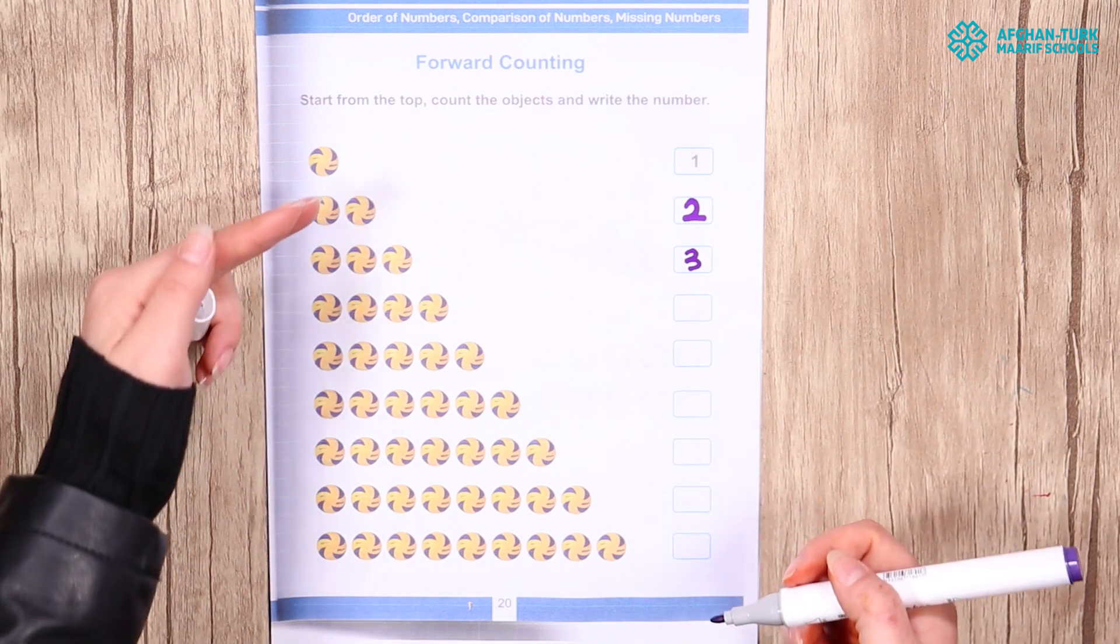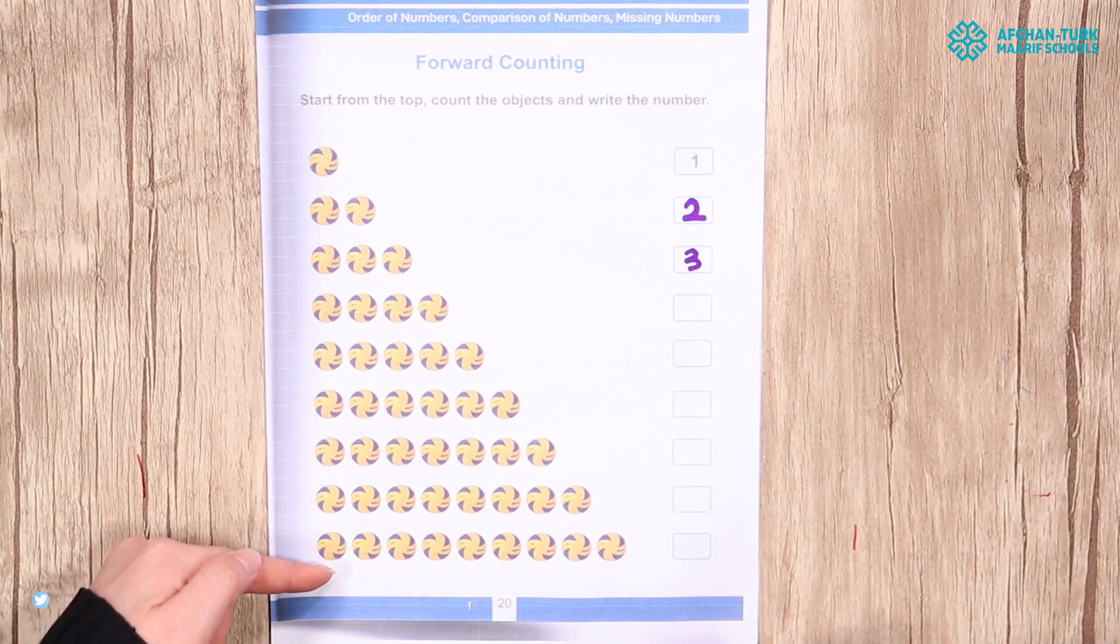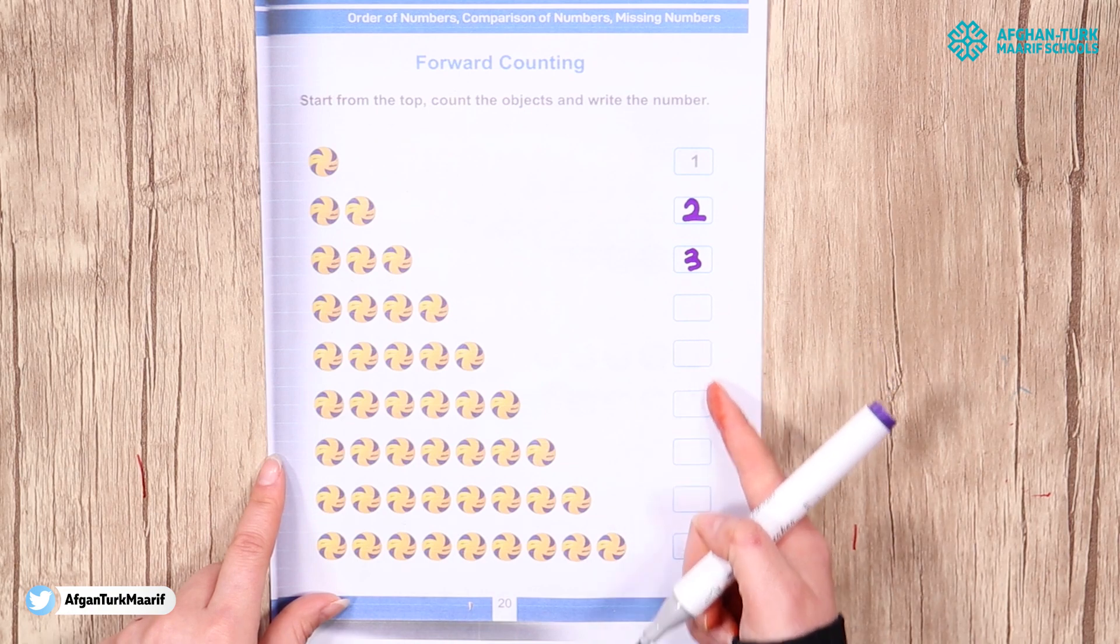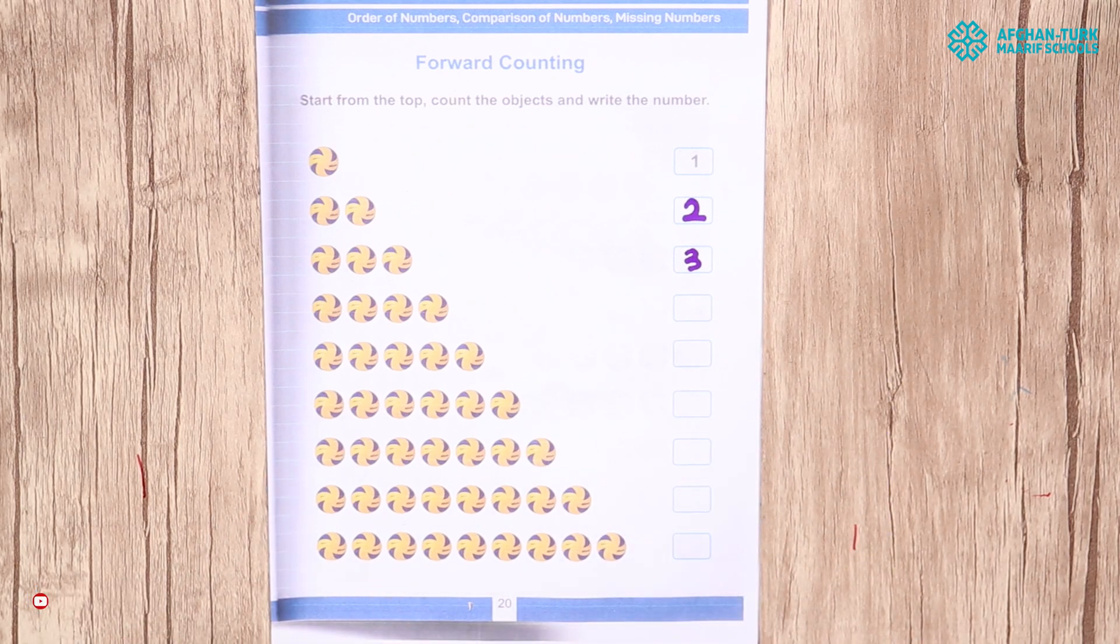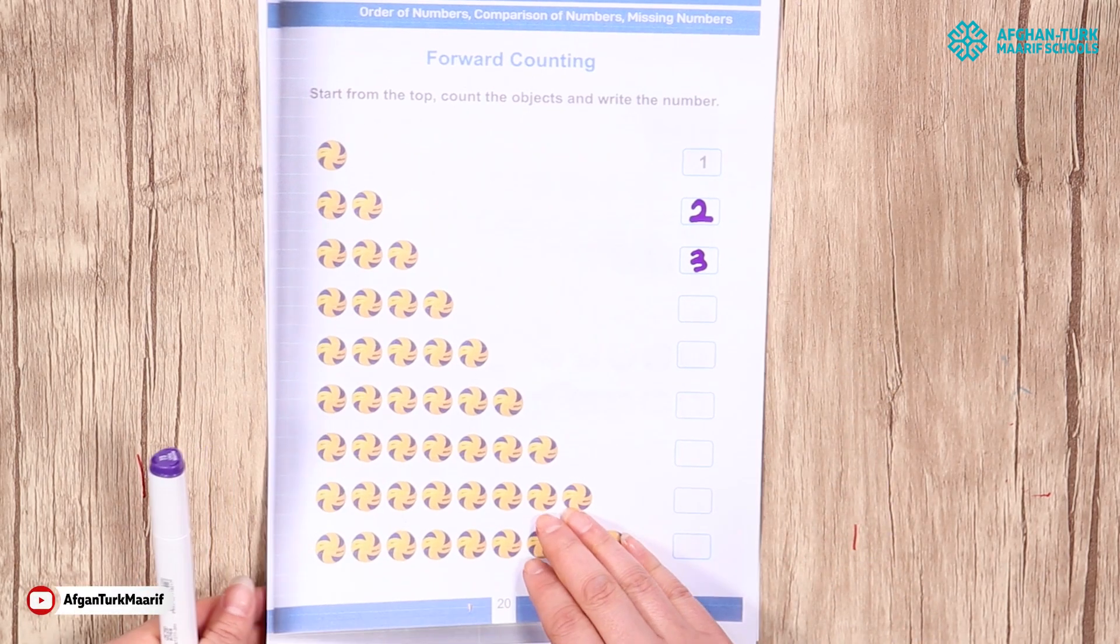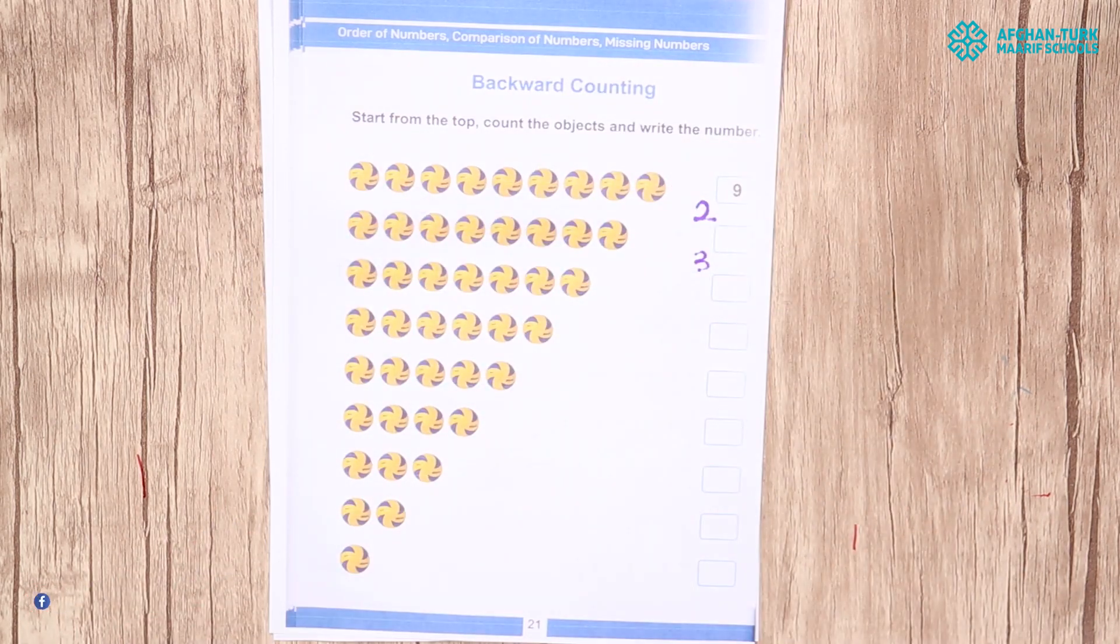And like this, students, count from top to the bottom and write the numbers of the balls in these boxes. And come to page 21.